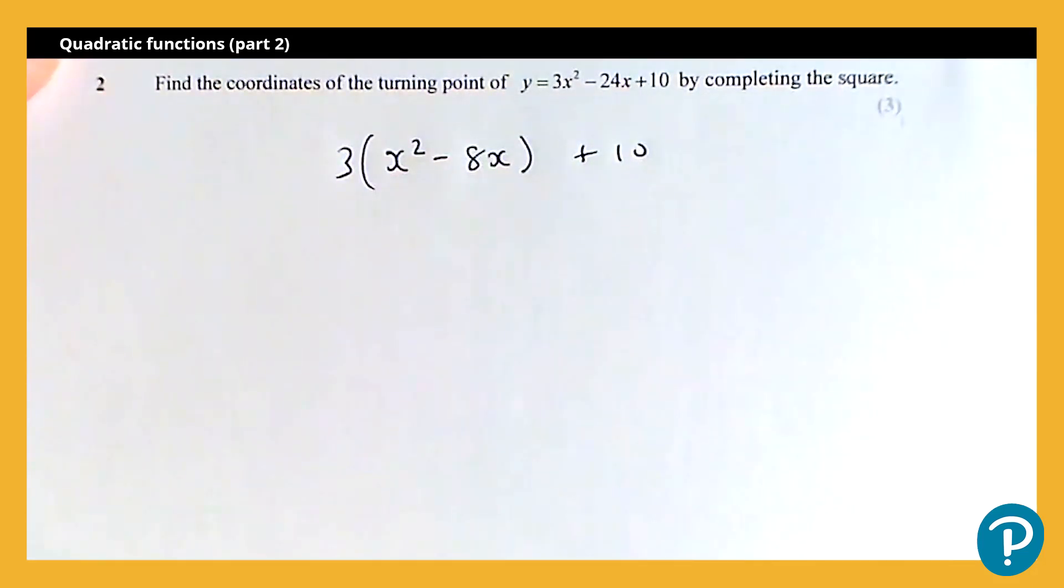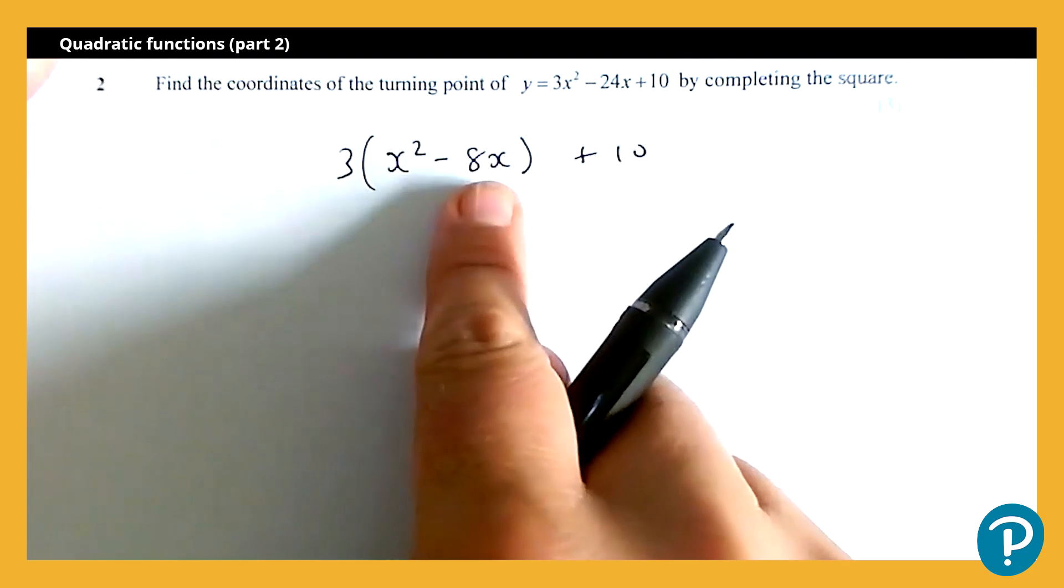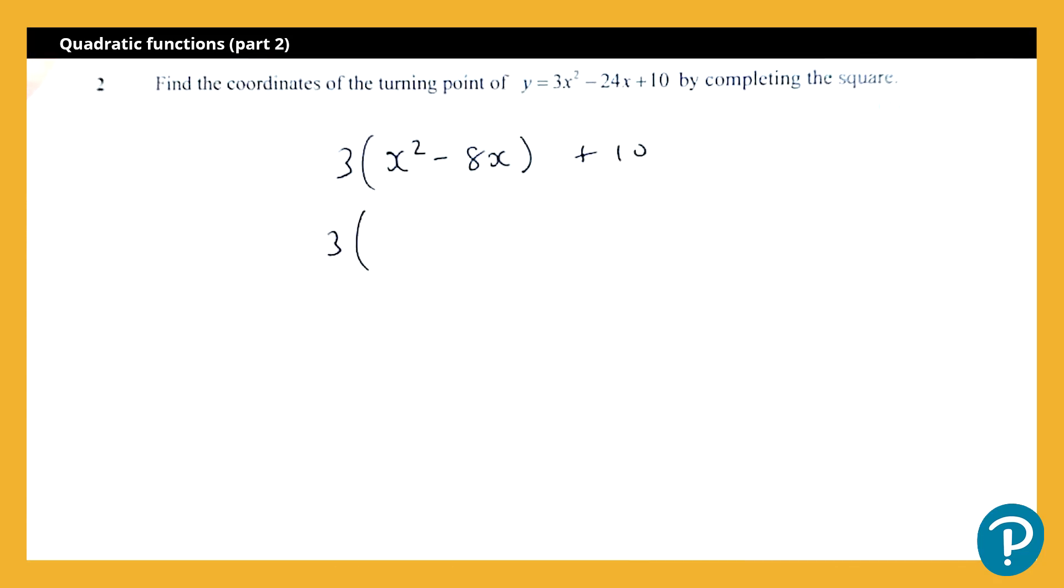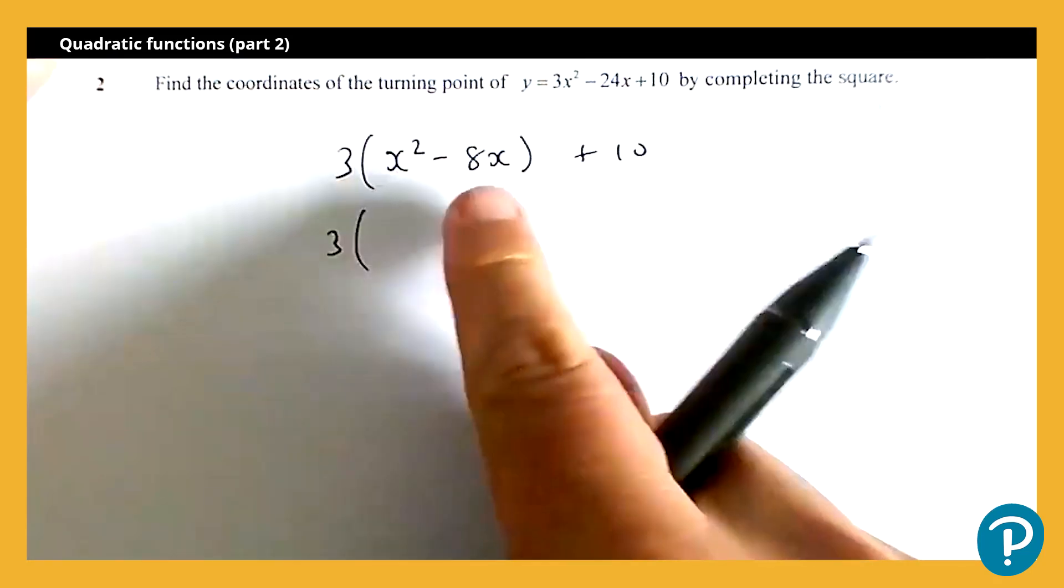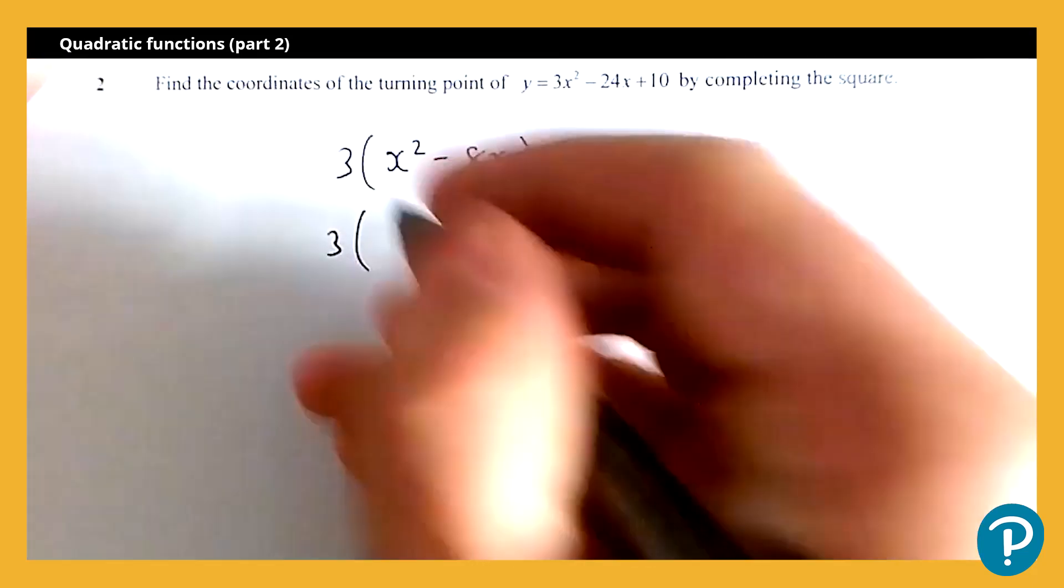I'm now going to look to complete the square on this expression here, the x squared minus eight x. So I'm going to leave that three there in a bracket by itself. Now when we're completing the square, we half the coefficient of x, so in this case half of negative eight, which would be negative four. So that will give me x subtract four all squared.